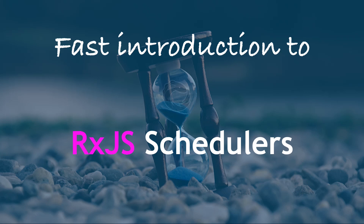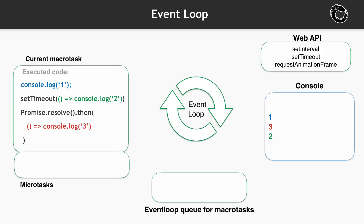Possibly you already know that topic, but please don't skip – recalling it will help us to be on the same page. To understand how schedulers work, we have to recall what is the JavaScript event loop in a browser. The main entities here are MacroTask, MicroTask, and the EventLoop MacroTasks Queue.